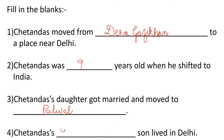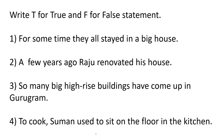Chetan Das had 2 sons and 1 daughter. His younger son stayed in Delhi, and his elder son is living in Sona. Let's move to the next question.